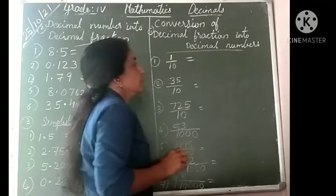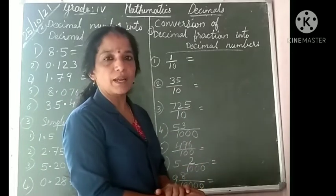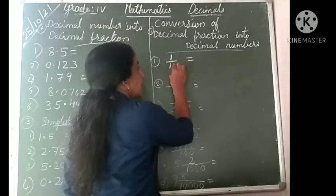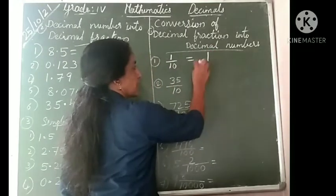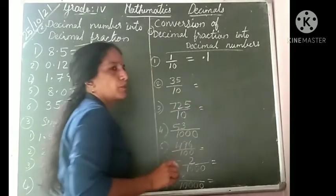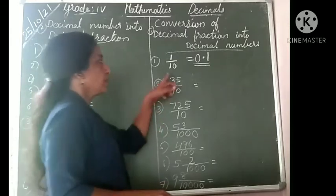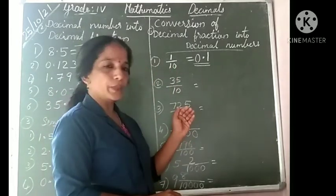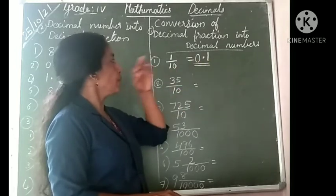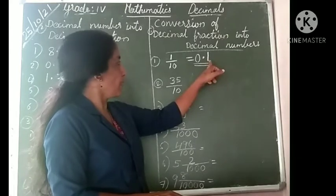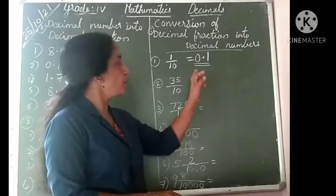Take 1 divided by 10. We know decimal numbers have a whole part, a decimal point, and a decimal number. Here the denominator is 10, which has one zero. So take the numerator 1, and since there is one zero, put the point before 1 digit. There is no whole part, so we put 0. This number is 0.1.